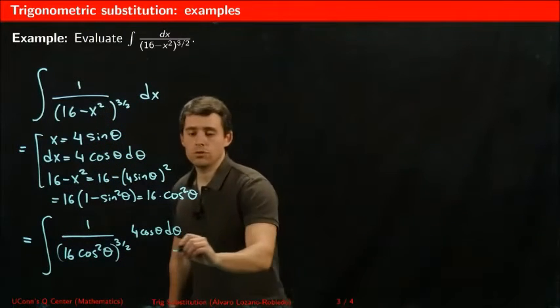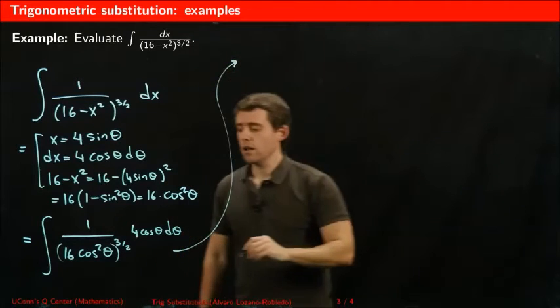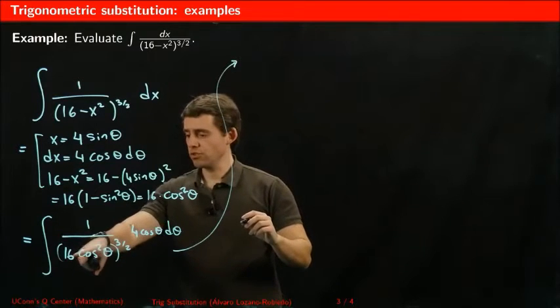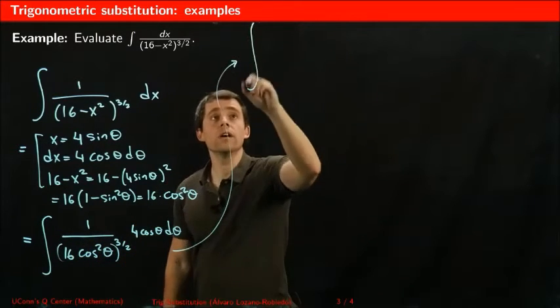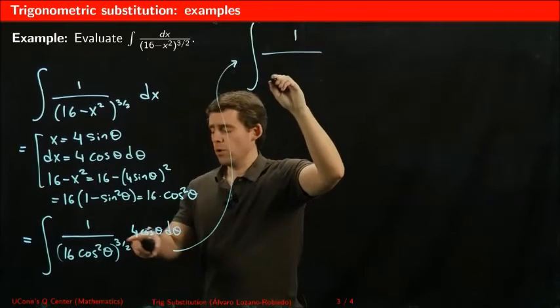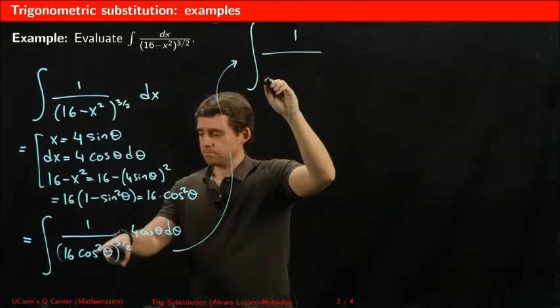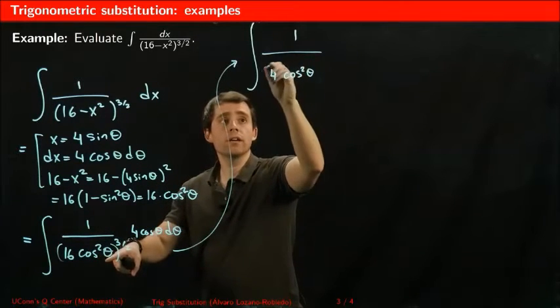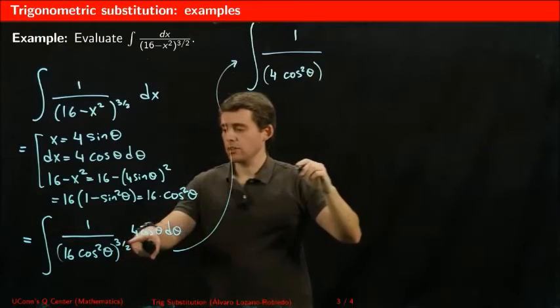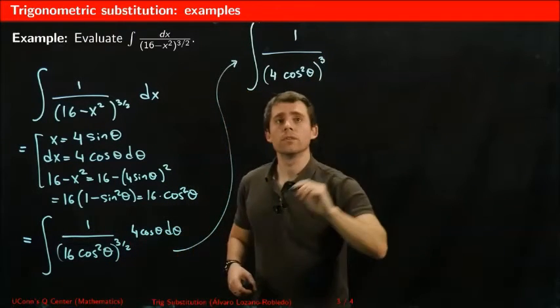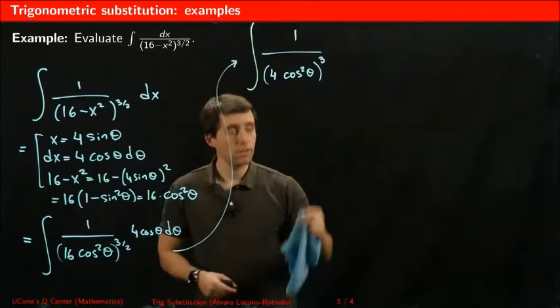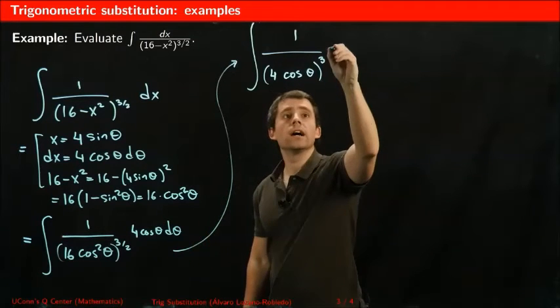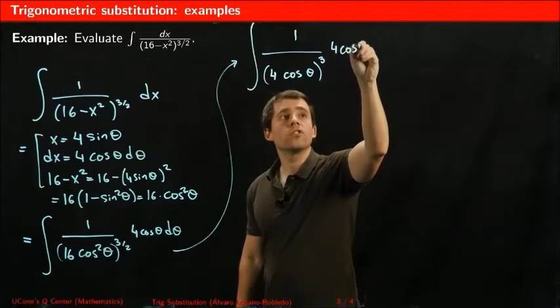So now I'm going to bring this over here. And this becomes then the square root cancels with the square here and the cosine squared here. So what I get is 1 over 4 cosine squared theta, everything to the third power. Oops, without the square. This square went away. And times 4 cosine theta d theta.